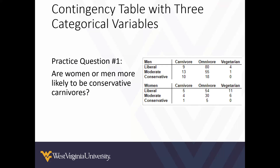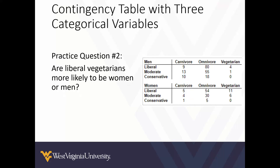Based on this, we can answer questions and determine trends with three categorical variables. Are women or men more likely to be conservative carnivores? Looking at conservative and carnivore by frequency, men appear more likely to be conservative carnivores. Are liberal vegetarians more likely to be women or men? Looking at liberal vegetarian — 4 and 11 — it looks like women are more likely to be liberal vegetarians.